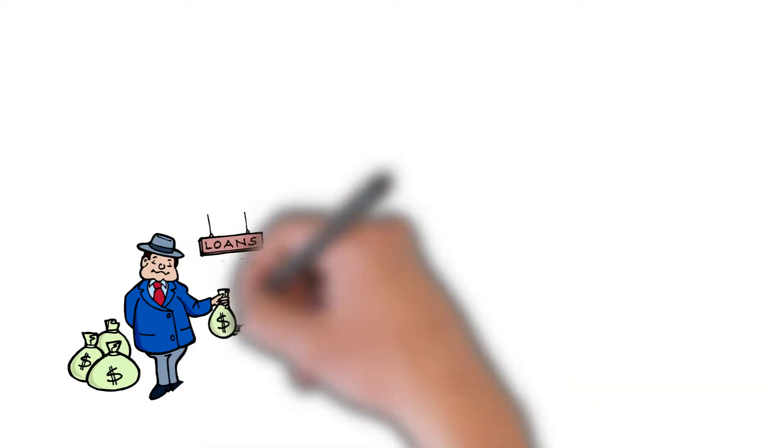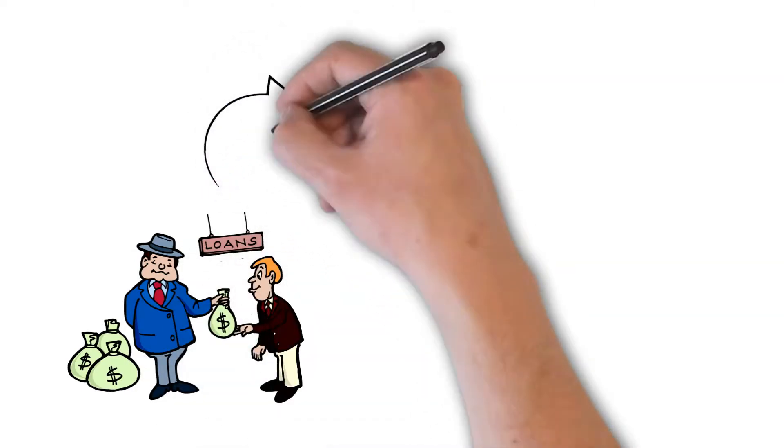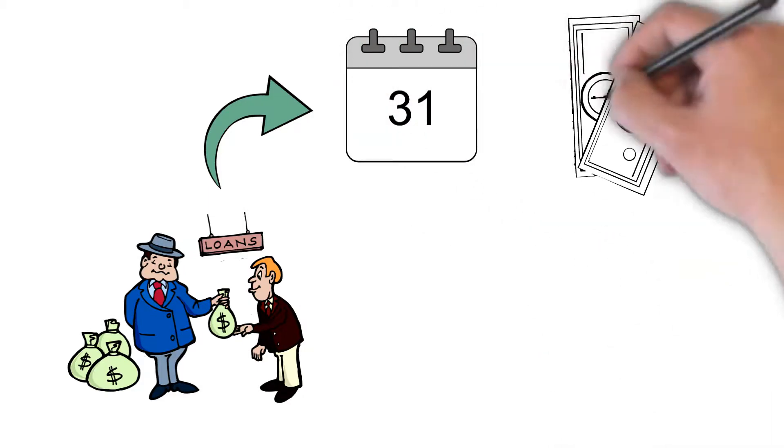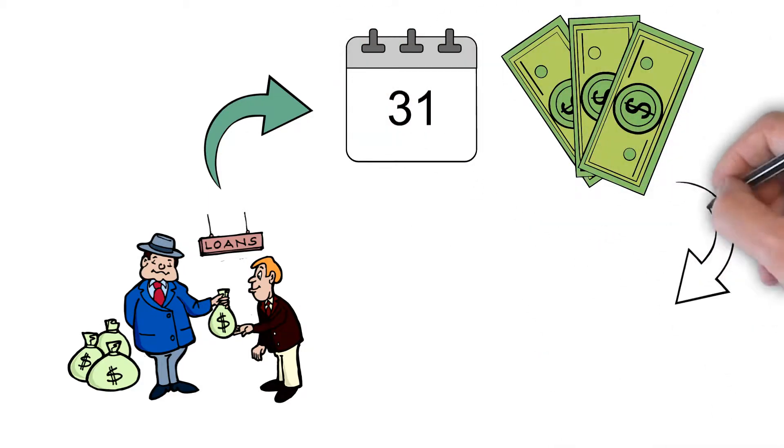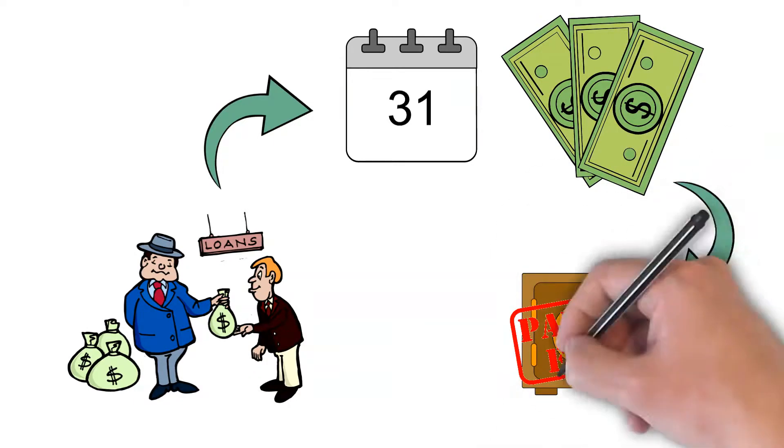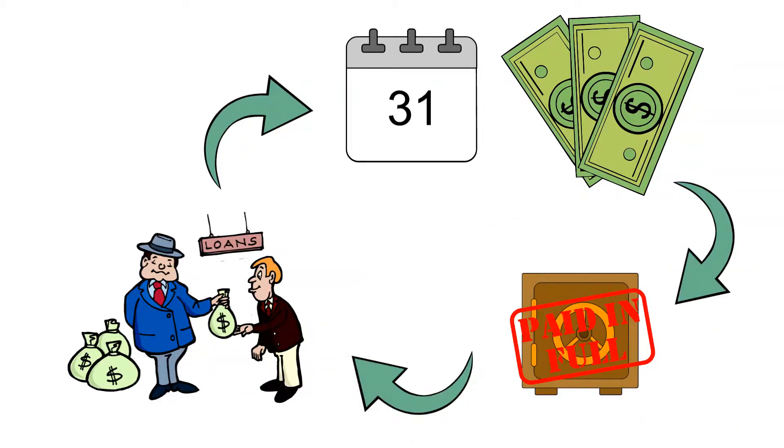So you start off by buying a loan from a bank. Congratulations, you're now your own bank. And like a bank, you now collect monthly payments from the borrower on their mortgage. You collect these payments until the note has been paid in full. Once you've been paid in full, you'll need to reinvest in another loan and start the process over again.